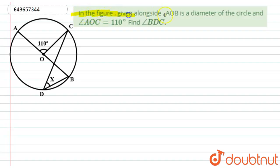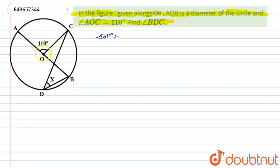Hello students, let's start with the question. In the figure given alongside, AOB is a diameter of the circle and angle AOC equals 110 degrees. We have to find angle BDC, marked as x in the figure.